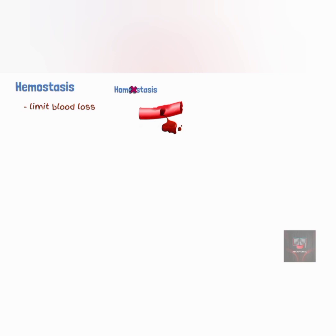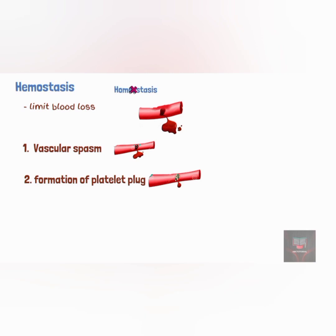Three mechanisms work together during hemostasis: vascular spasm, platelet plug formation, and blood clotting, also known as blood coagulation. When arteries or arterioles are damaged, smooth muscles in their walls contract immediately.